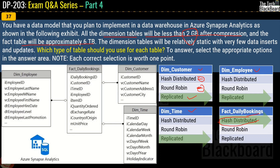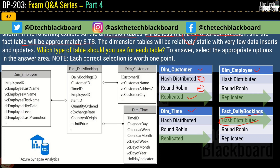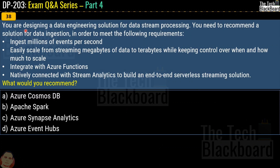If you have any doubts or want more discussion, connect with me in the comment section below or reach the Tech Blackboard on other social media platforms. Question number 38 asks: you are designing a data engineering solution for data stream processing and need to ingest millions of events per second, easily scale from megabytes to terabytes, integrate with Azure Functions, and natively connect with Stream Analytics for an end-to-end serverless streaming solution. The correct answer is option D, Azure Event Hubs.